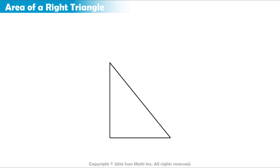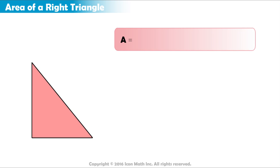The formula to find the area of a right triangle is A equals bh over 2, or area equals the base times the height divided by 2.